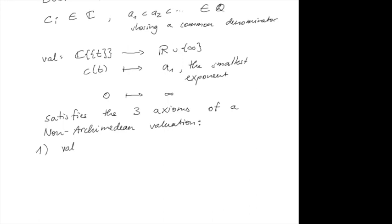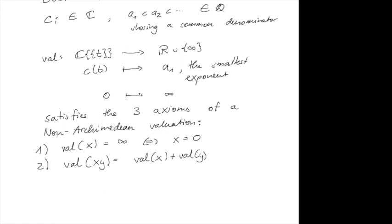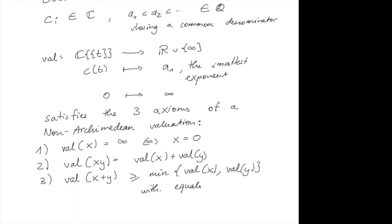The first axiom is: the valuation of a number is infinity if and only if the number is zero. The second is: the valuation of a product is the sum of the valuations. The third is: the valuation of a sum is less than or equal to the minimum of the valuations, with equality if the valuations are not equal. We checked that our valuation on the field of Puiseux series satisfies those three axioms.